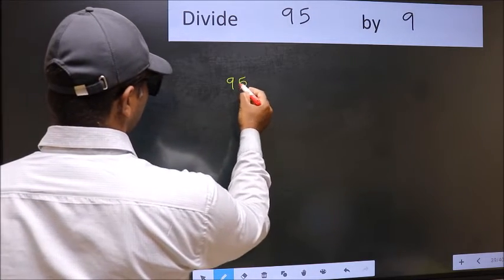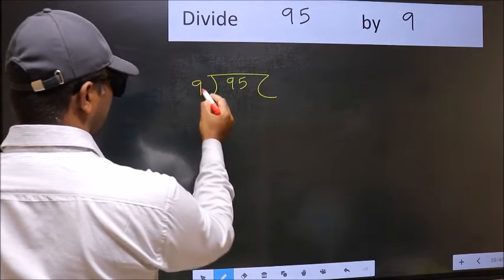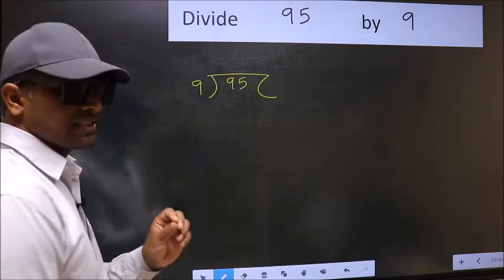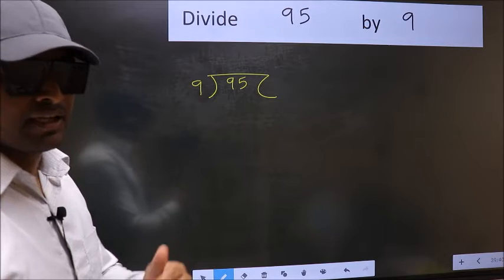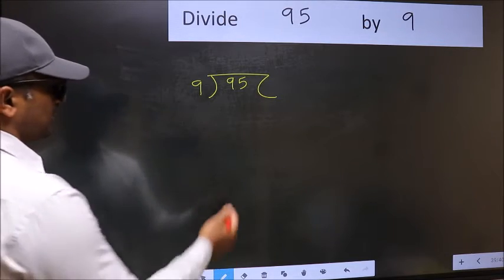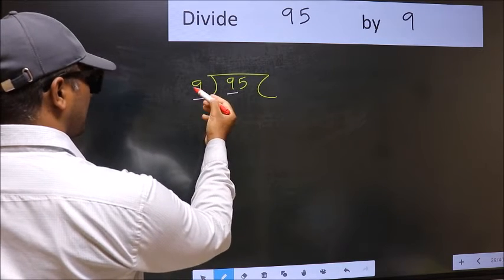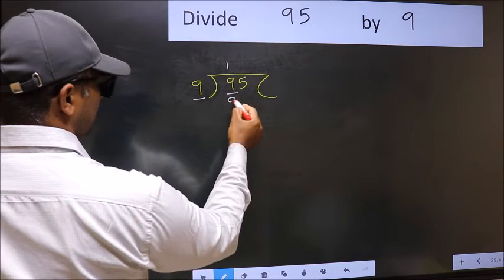95 and 9 here. This is your step 1. Next, here we have 9 and here also 9. When do we get 9 in the 9 table? 9 once is 9.